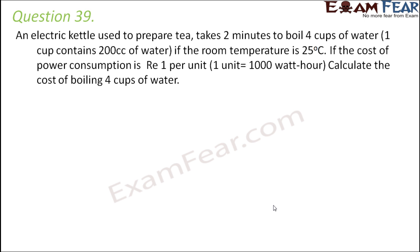Question number 39: an electric kettle used to prepare tea takes 2 minutes to boil 4 cups of water. One cup contains 200 cc of water and the room temperature is 25°C. The cost of power consumption is rupees 1 per unit, where 1 unit is 1 kilowatt-hour. Calculate the cost of boiling 4 cups of water. First we calculate the energy consumed using Q = mc∆T.